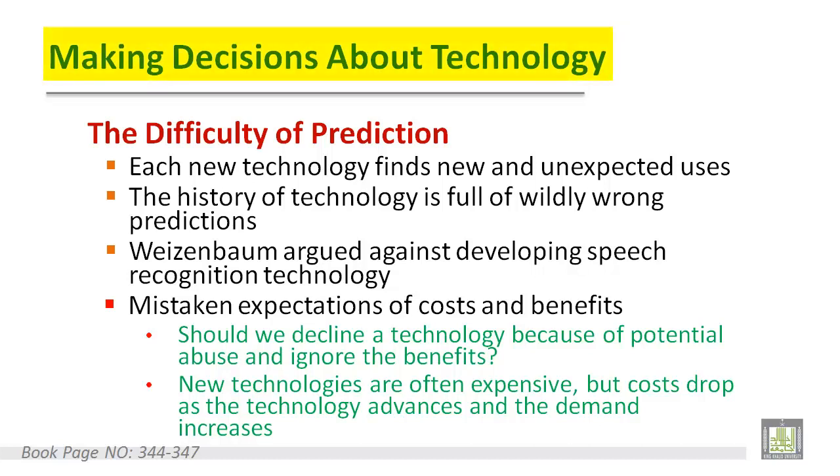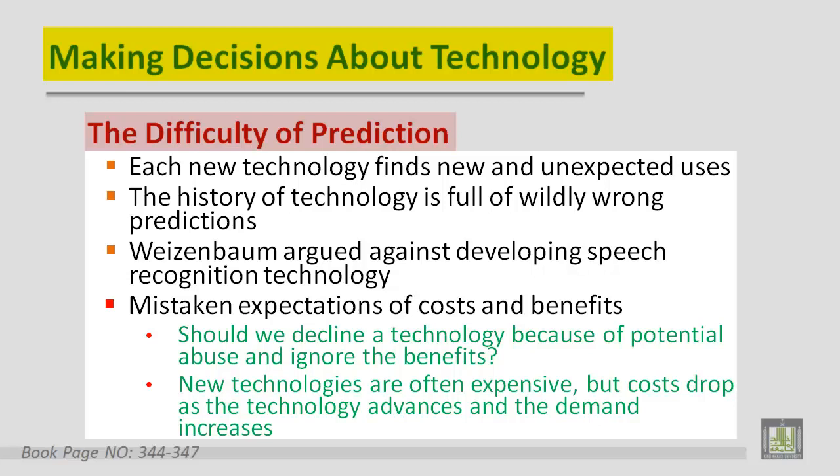Making a decision about technology is not an easy process because there are many difficulties behind it. One of them is the difficulty of prediction — each new technology finds new and unexpected uses, and the history of technology proves that, since there are many wrong predictions and expectations about new technology. So for the wrong expectations of cost and benefits, should we decline the technology because of potential abuse and ignore the benefits? This is an important issue.